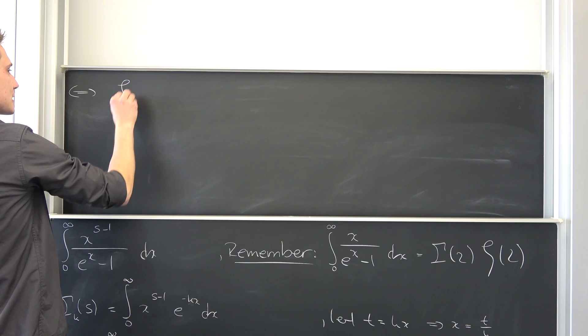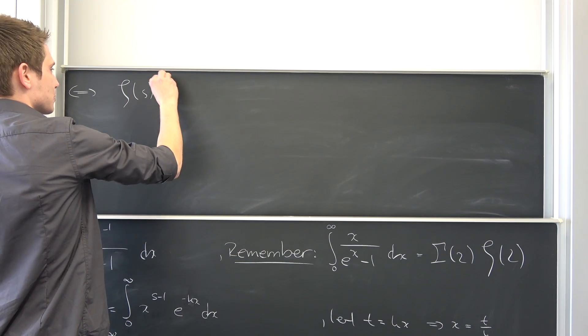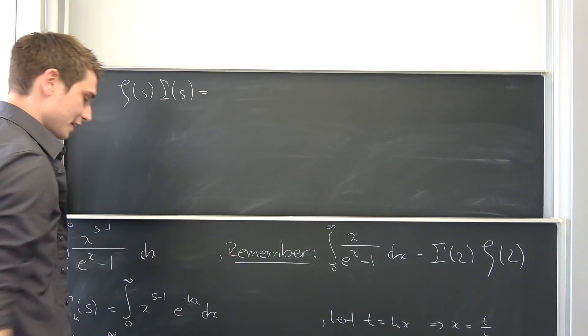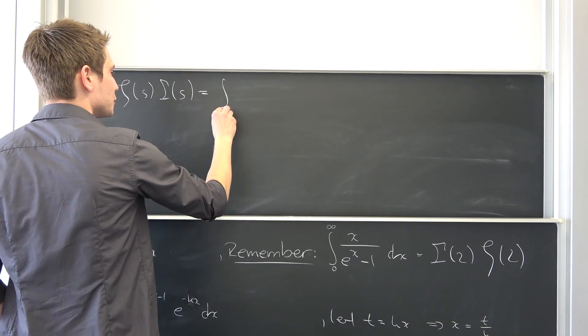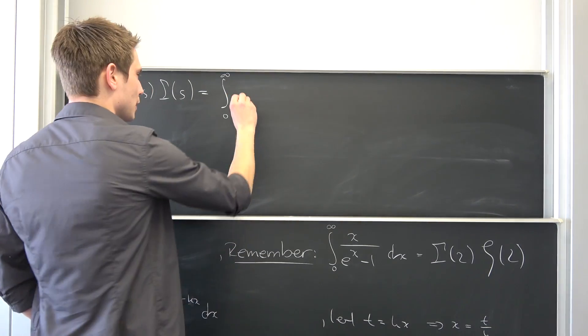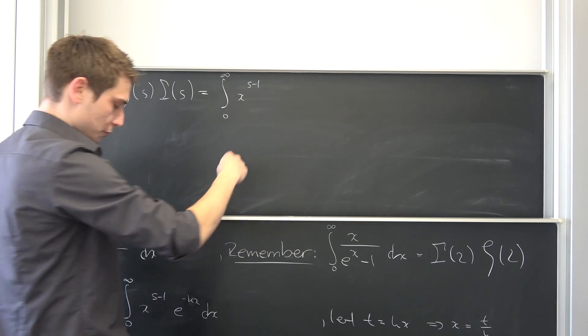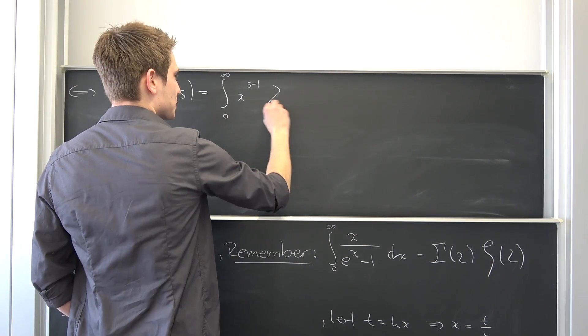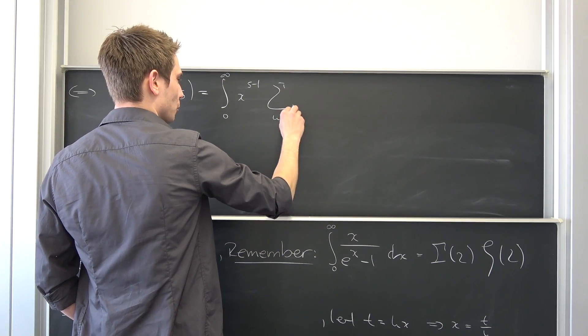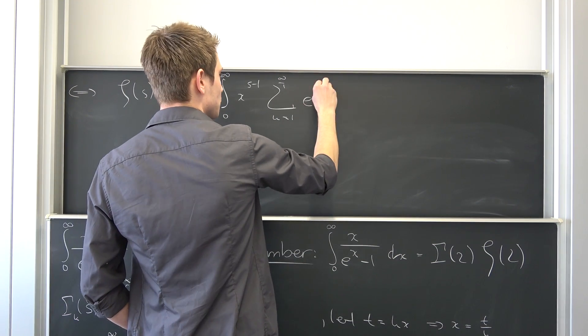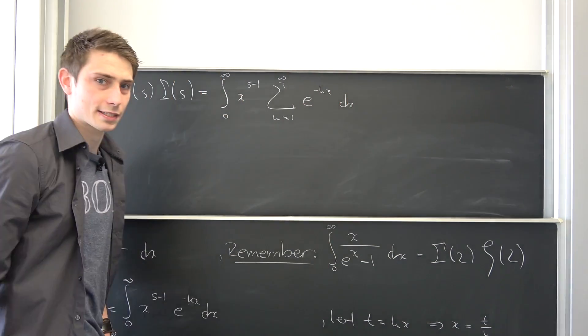that our Riemann zeta of s times the gamma function of s is now nothing but, well, our integral from 0 to infinity. Then we have x to the s minus 1 power times this infinity boy from 1 to infinity e to the negative k times x, integrated with respect to x.